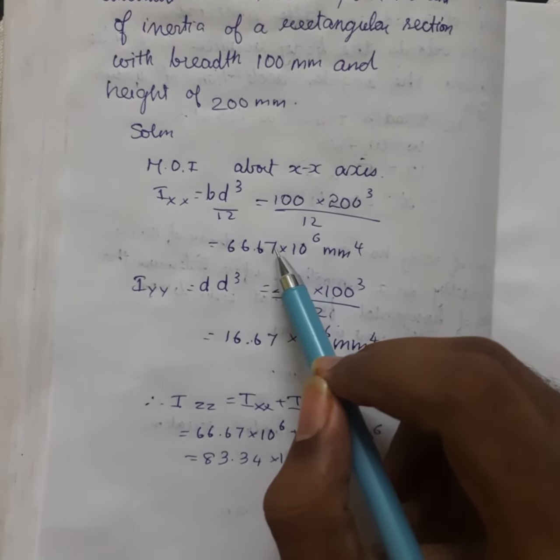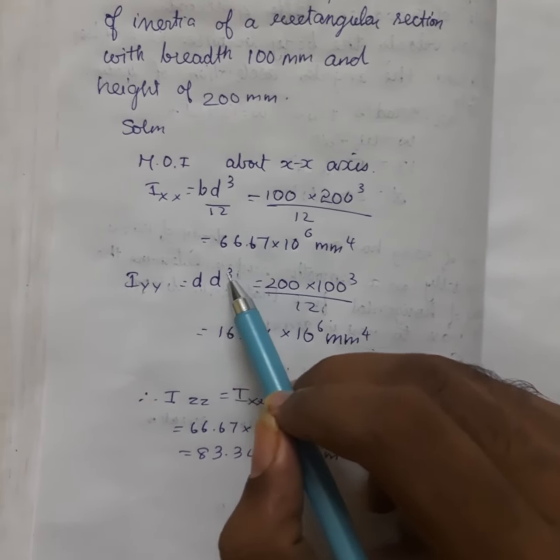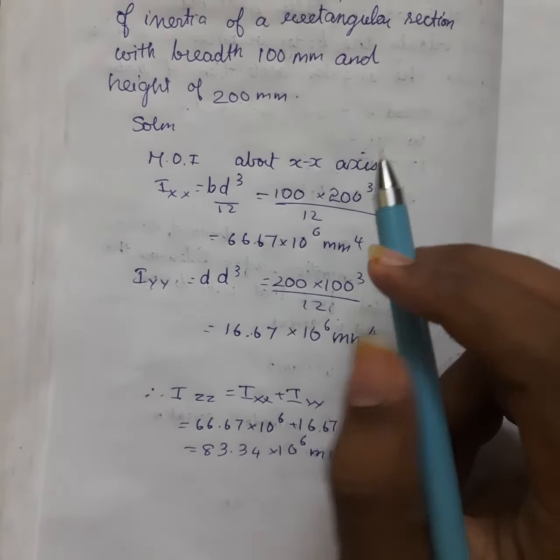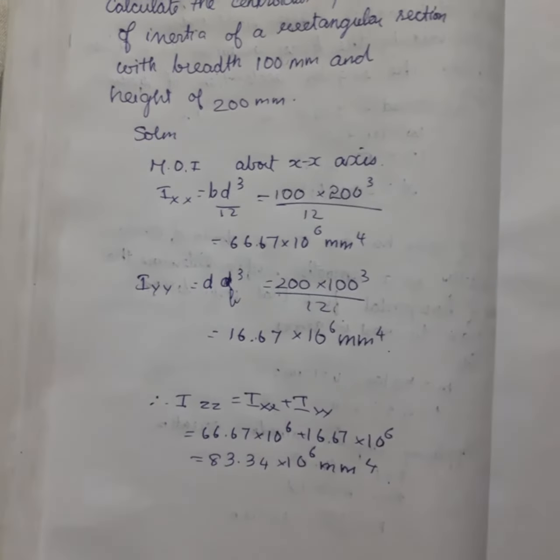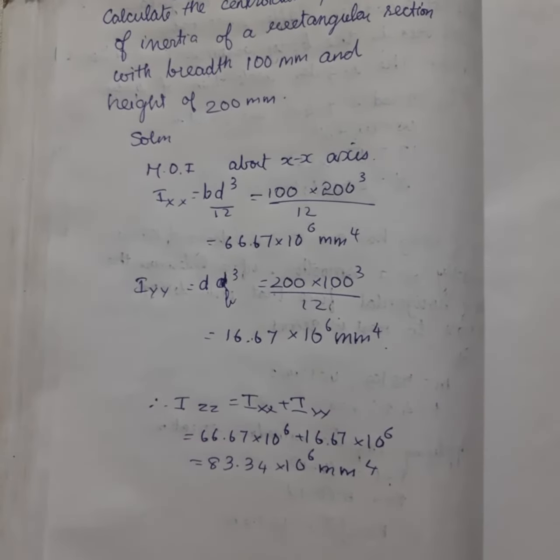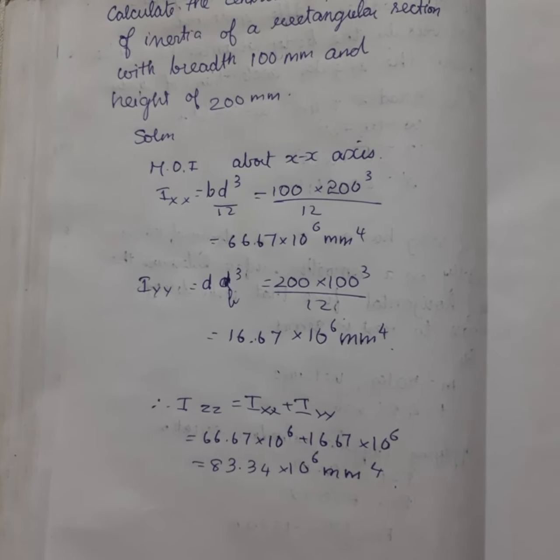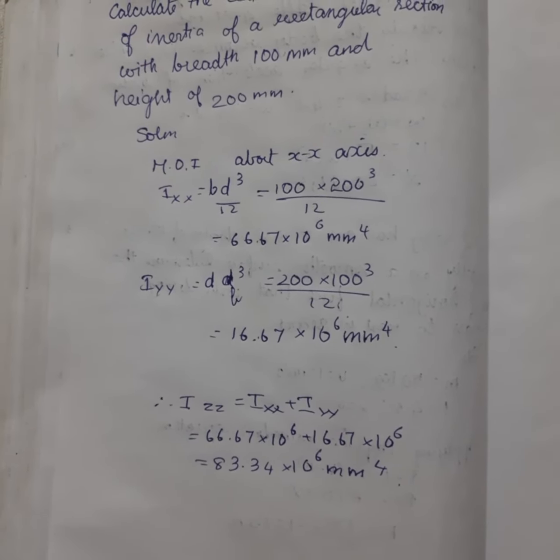I_yy equals d times b³ divided by 12, which is 200 times 100³ divided by 12, which equals 16.67 times 10⁶ mm⁴.